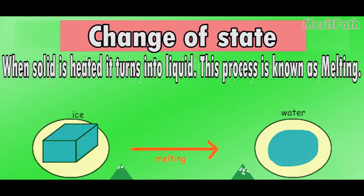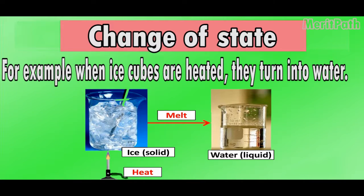When solid is heated, it turns into liquid. This process is known as melting. For example, when ice creams are heated, they turn into liquid.